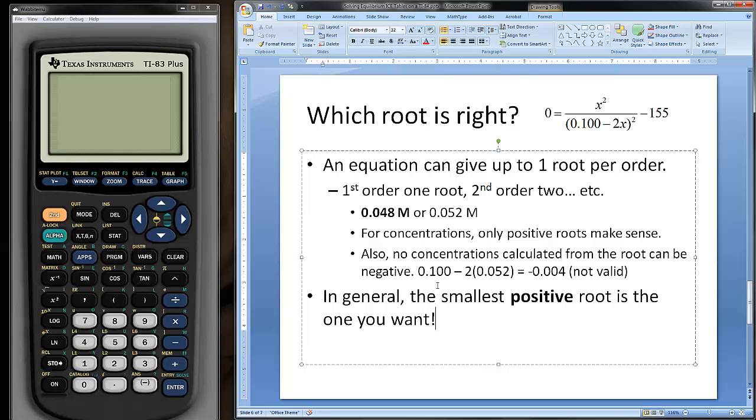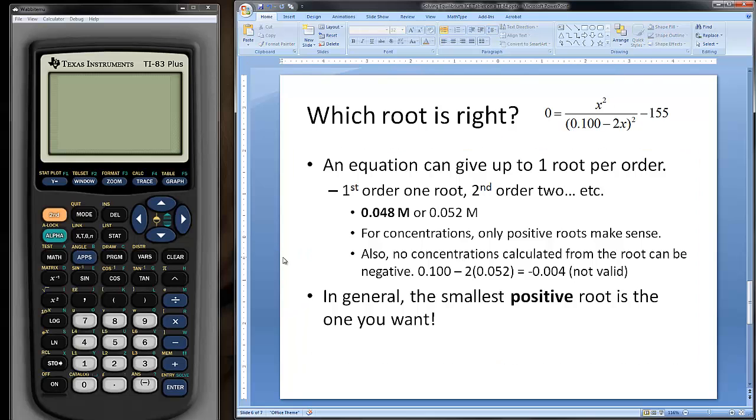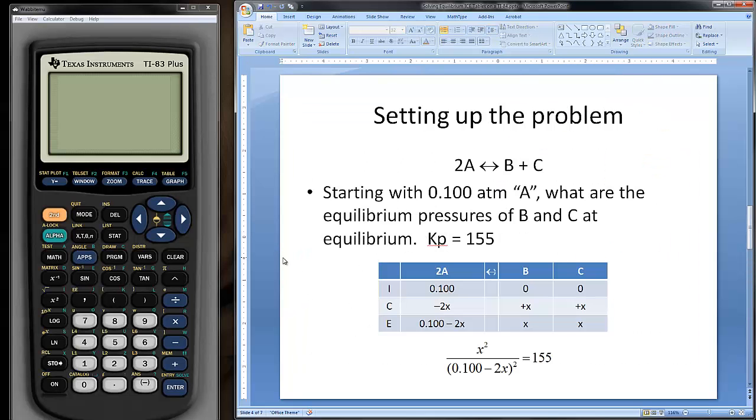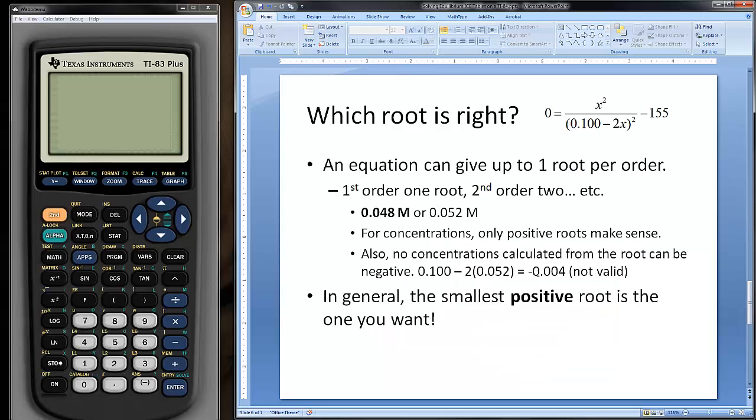For example, if you think about 0.100 - 2 × 0.052, this is going to give you a value of -0.004. But what does this value actually represent? Well, if you go back, this value, the bottom part of the equation, represents the concentration of A at equilibrium. The concentration of A can't be less than 0, so we have to eliminate 0.052 as a root.